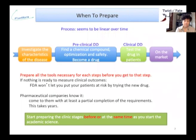When should you prepare? The process seems to be linear over time, and some make the error of taking it that way, losing a lot of time and efficiency — which is not the best way to convince a company to invest in you. You should prepare all the tools necessary for each step before you get to that step. For example, if nothing is ready to measure clinical outcomes, the FDA won't let you put patients at risk by trying a new drug, and pharmaceutical companies know it. You need to come to them with at least a partial completion of the requirements — and this takes years.